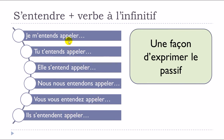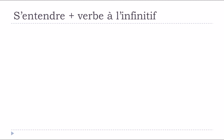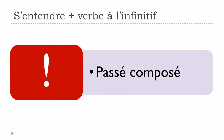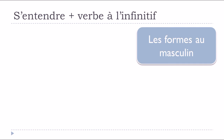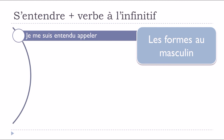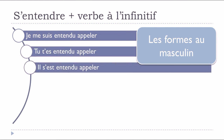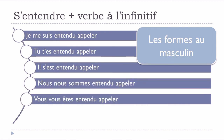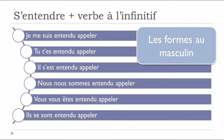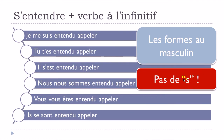In French we've got some tricky forms, and we're talking here about le passé composé. For the masculine: je me suis entendu appeler, tu t'es entendu appeler, il s'est entendu appeler, nous nous sommes entendu appeler, vous vous êtes entendu appeler, ils se sont entendus appeler. The main thing to keep in mind is that you don't put the -s at the end of the participe passé when you use s'entendre followed by a verb at the infinitive.